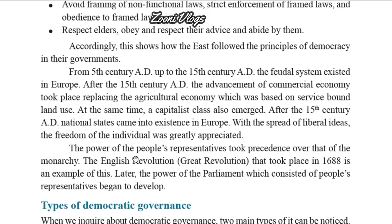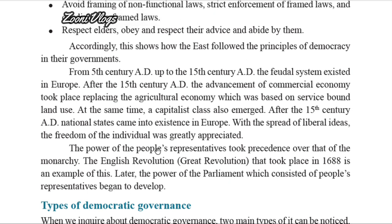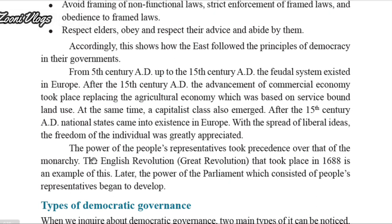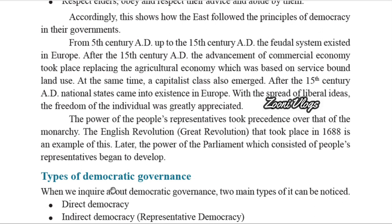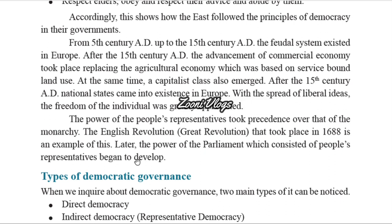The power of the people's representatives took precedence over that of the monarchy. The English Revolution of 1688 is an example of this. Later, the power of parliament, which consisted of people's representatives, began to develop. Nowadays we can see a parliament in our country too — these are the historical evidences.